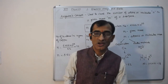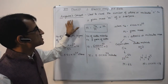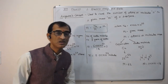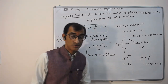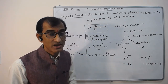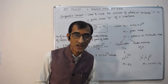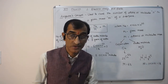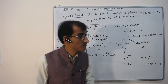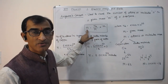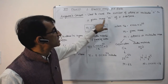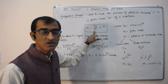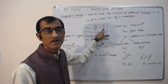Let us discuss Avogadro's concept. This concept is used to count the number of atoms or molecules in a given mass of a substance. For example, if a material is given as 10 grams or 5 grams, you can ask how many atoms or molecules are in this material. The expression is: N, the number of atoms or molecules, equals Avogadro's number divided by atomic or molecular mass, multiplied by the given mass.